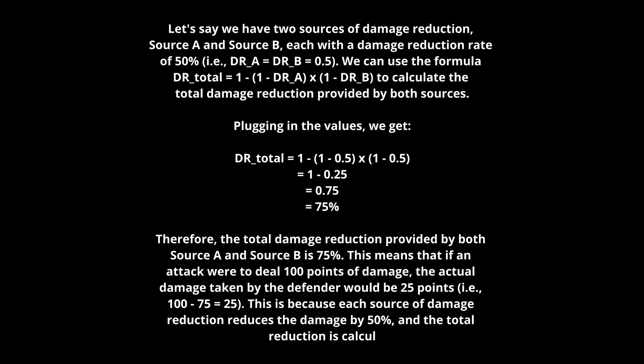This is an example I got from ChatGPT. Let's say we have two sources of damage reduction, Source A and Source B, each with a damage reduction rate of 50%. These are damage reduction for a specific source—they can be different ones that don't stack, but in this case let's say each has a 50% damage reduction rate. So the first one is 0.5 (50%) and the other is also 50%.